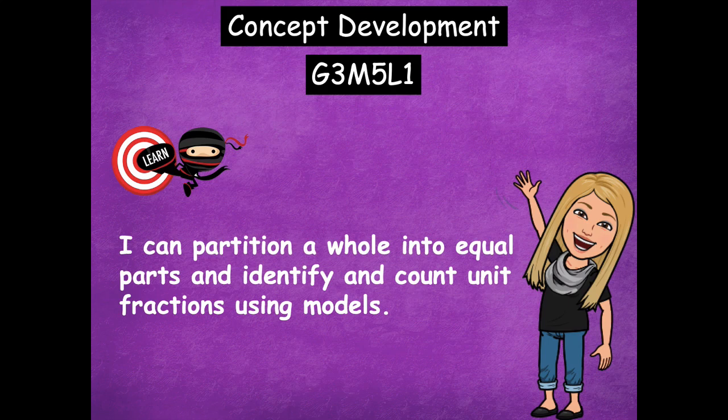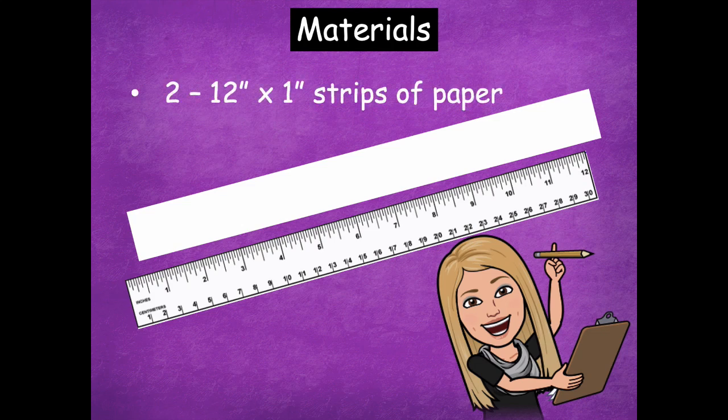Partition just means you're breaking apart and splitting into equal parts. Identifying and counting the unit fractions is just counting how many parts there are in your fraction. So when you partition the shape into two pieces, two parts is your unit fraction — you're counting one part and then two parts. The materials you'll need are two 12-by-one-inch strips of paper — 12 inches long by one inch high — and your ruler. Cut out your strips already, then click play when you're ready to begin the lesson.